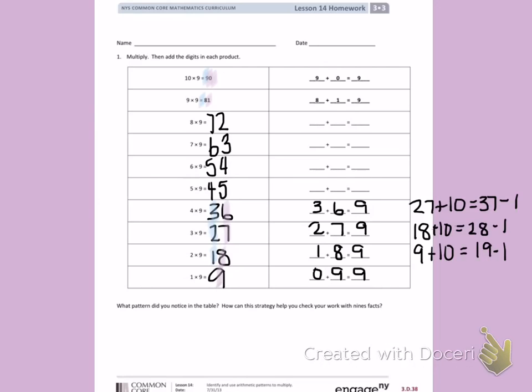Coming back to 5 times 9. The digits in my answer are 4 and 5. That equals 9. The digits in 6 times 9 are 5 plus 4, which equals 9. The answer to 7 times 9 is 63, which is 6 plus 3, that equals 9. 8 times 9 is 72, 7 plus 2 equals 9.